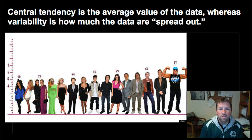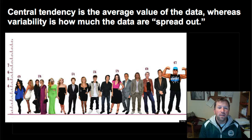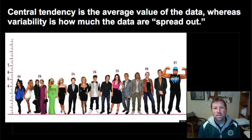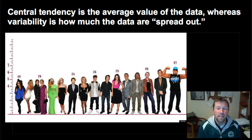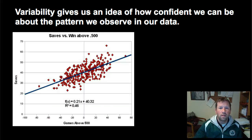But that doesn't tell us the whole story. If we say celebrities are five foot six on average, we might still wonder whether most of them are about five foot six or whether they're really spread out in terms of height. Looking at this chart, we can see they're fairly spread out — all the way down to four foot nine and all the way up to six foot seven. So we have quite a bit of what's called variability in this data set; the data points aren't all clustered around the average but are more spread out.